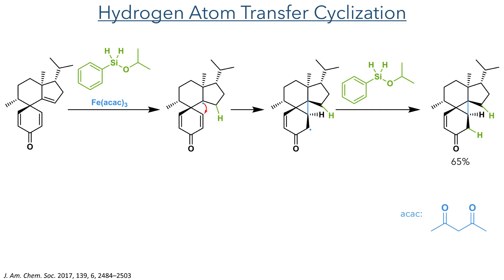The quinone formed by this reaction took part in the next step, which was a hydrogen atom transfer cyclisation. Isopropoxyphenylsilane and an iron(III) acetylacetonate complex react with a more electron-rich double bond, transferring a hydride and generating a radical on the tertiary centre. This radical can then undergo a Giese addition to the quinone, forming the desired cyclopropane ring together with generation of a radical on the alpha position that then reacts with another equivalent of isopropoxyphenylsilane to complete the reaction in a 65% yield.